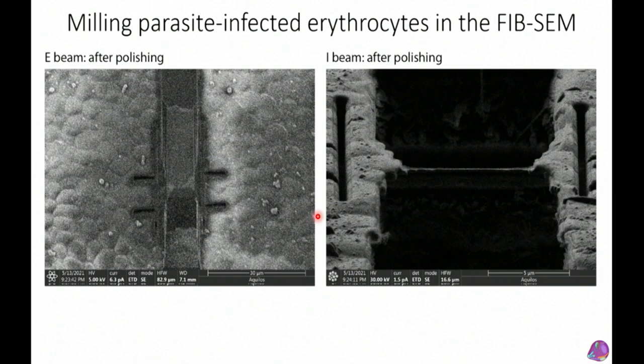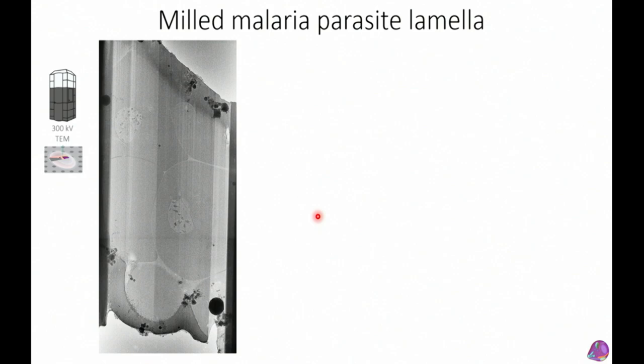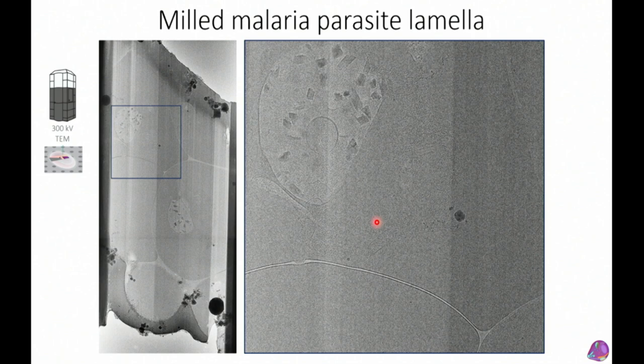We transfer the lamella under liquid nitrogen to the transmission electron microscope. Once inside, you can see the gorgeous lamella: uninfected red blood cells appearing completely flat with just hemoglobin, and then zooming into an infected cell revealing beautiful digestive vacuoles and all the detail of the parasite living inside the red blood cell.